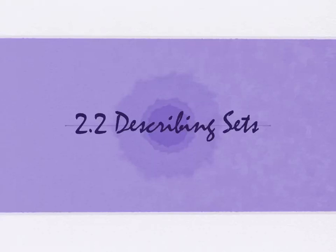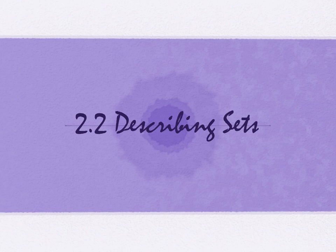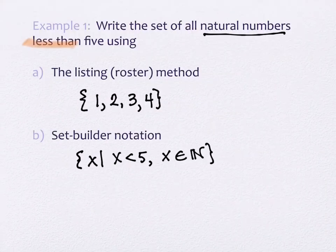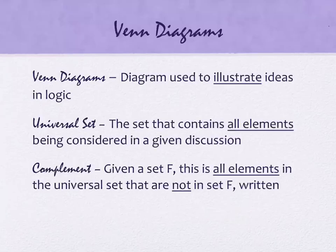So we started section 2.2 last time. We're describing sets, and we're going to continue in this vein. We are at the point where we got to Venn diagrams. Does that sound right? Wonderful.